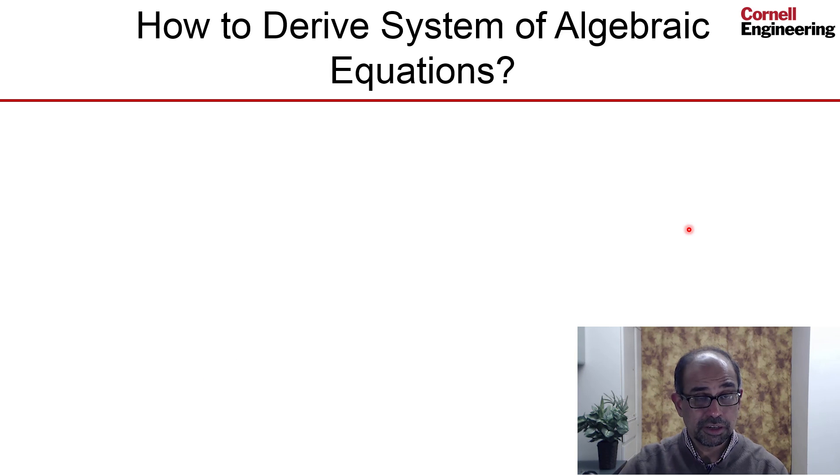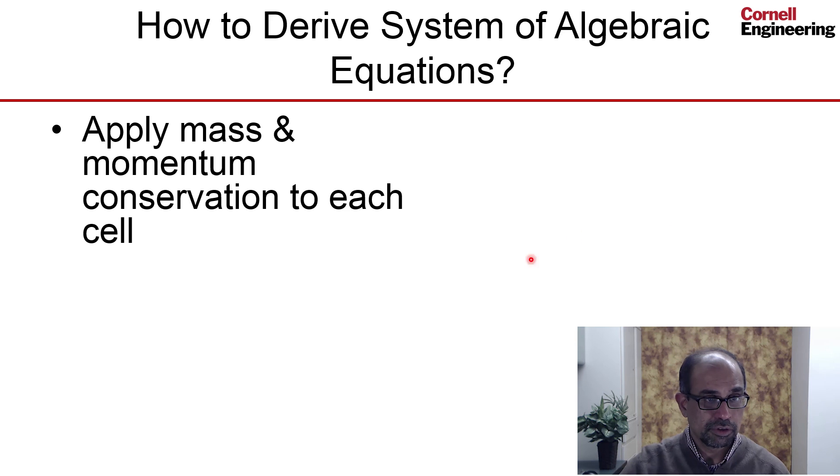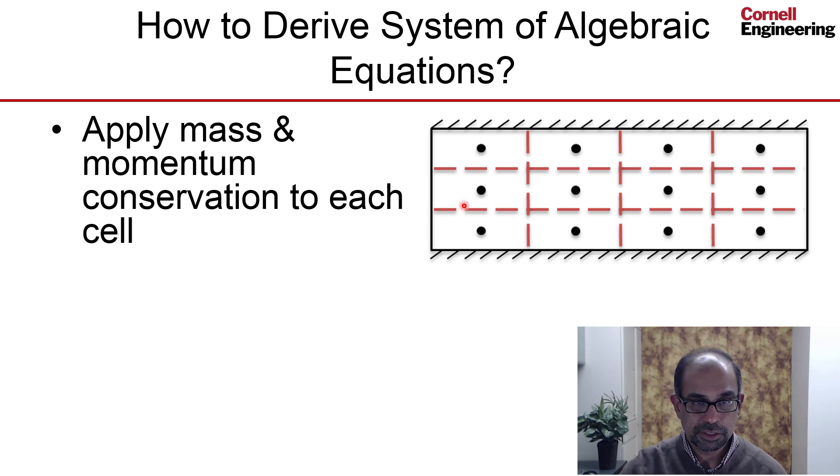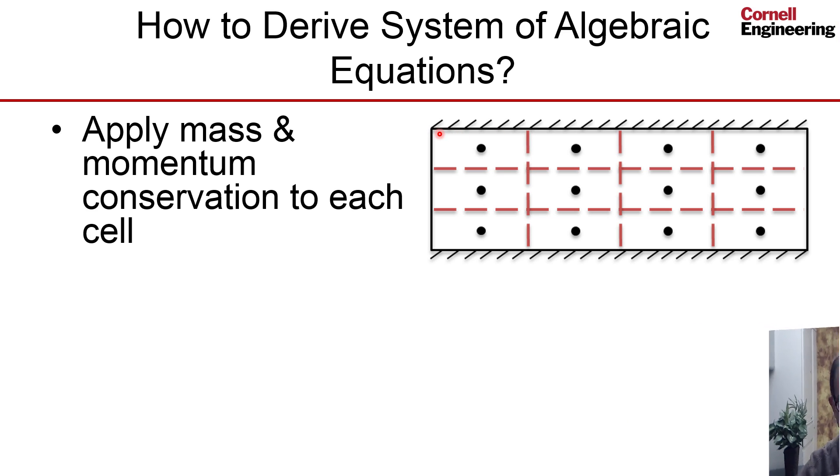And armed with the integral form, we apply mass and momentum conservation to each cell. Now, if we go back to our particular example, and let's consider this cell over here. And we do a control volume balance for this cell. Let's say we do that for mass conservation. So that's the integral form of mass conservation.